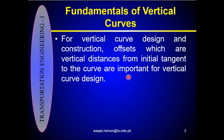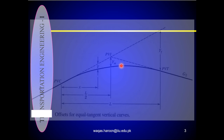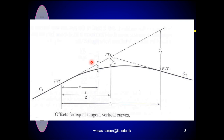In this lecture, we will discuss some additional parameters or properties of the vertical curves. We will start from the offsets — that is, what is an offset. Offsets are the vertical distances from the initial tangent to the curve, mostly used in the design and construction of the vertical curve. In this figure you can see offsets for equal tangent vertical curves. There are three offsets in this figure: Y, YM, and YF.